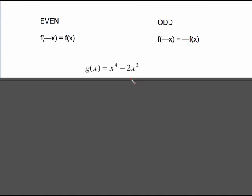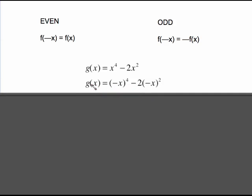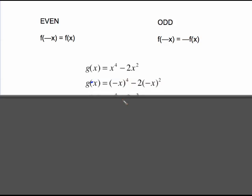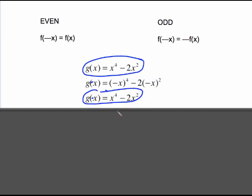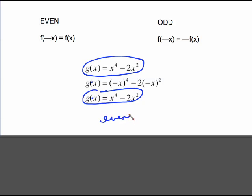Next example: g of x equals x to the fourth minus 2x squared. I'm going to find g of negative x. Plugging in negative x gives us negative x in parentheses to the fourth, minus 2 times negative x in parentheses squared. A negative raised to an even power comes out positive, and that negative raised to an even power also comes out positive. The original function and g of negative x are identical, which means this is an even function.